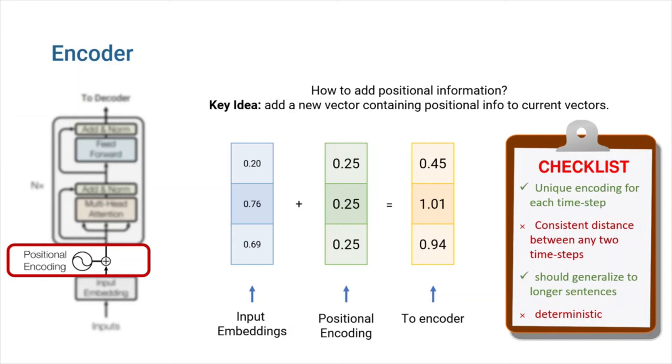Another possibility is to assign a number to each time step within the range 0 to 1, where 0 represents the first word and 1 represents the last. One of the issues it will create is the inability to determine how many words are present within a given range. To put it another way, the term time step delta does not have a consistent meaning across sentences. The authors of this paper introduce a new way for positional encoding that achieves everything we ask for in our checklist.